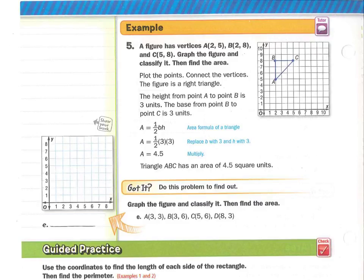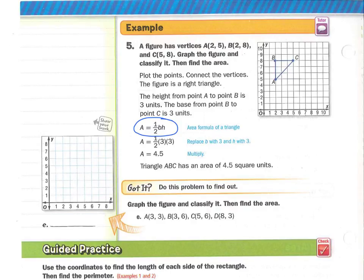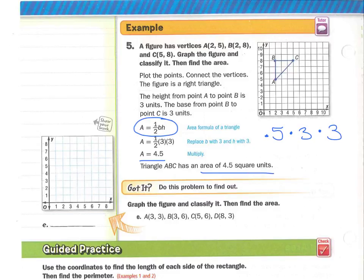We have a figure with vertices A(2,5), B(2,8), and C(5,8). If you were to classify it, it is a triangle. Find the area of the triangle using the formula one-half times base times height. The height from point A to point B is 3 units. The base from point B to point C is also 3 units. So we do one-half times 3 times 3 — 3 times 3 is 9, and one-half of 9 is 4.5. You can also use 0.5 on your calculator. The triangle has an area of 4.5 square units.